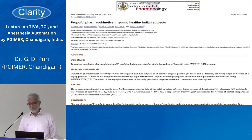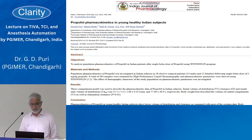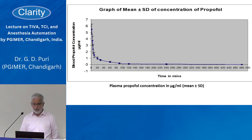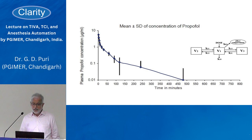Many years ago we used this method to find the PK in young healthy adult Indian subjects for propofol, injecting a bolus of drug and then measuring plasma concentrations in the blood at specific time intervals — starting from 2 minutes, 4 minutes, and so on up to 24 hours. We found a graph of mean ± standard deviation of concentration over time, and after taking the log and plotting it, we obtained the typical three-phase curve.